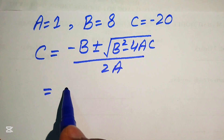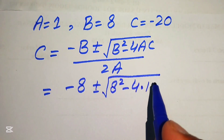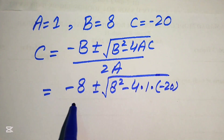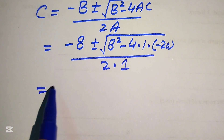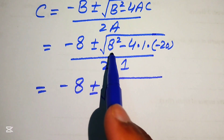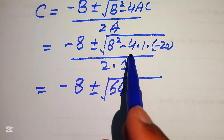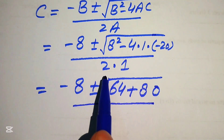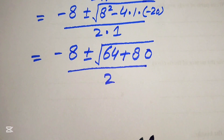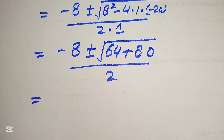Substituting the values with B equals 8, we get minus 8 plus or minus square root of (8 square minus 4 times 1 times minus 20), divided by 2 times 1. This gives minus 8 plus or minus square root of (64 plus 80), divided by 2. Adding 64 plus 80 gives 144.